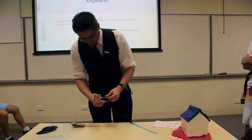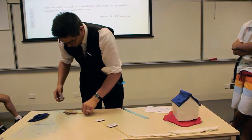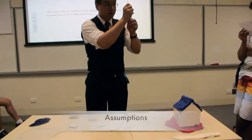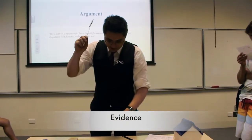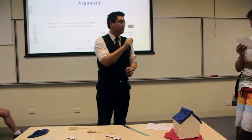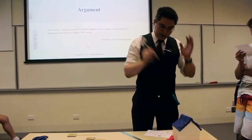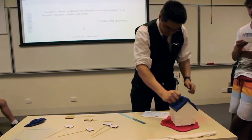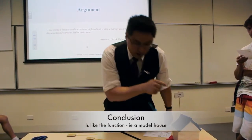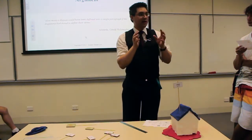What I have here is a house. And the parts of logic that I want you to learn are things called theory, assumptions, and we have some evidence, we have arguments, and we have a final conclusion. So, let's start off with a conclusion first. What I've got here is a house. This here — the function — is a house. It's a little model house. That is my conclusion. That's what it does.